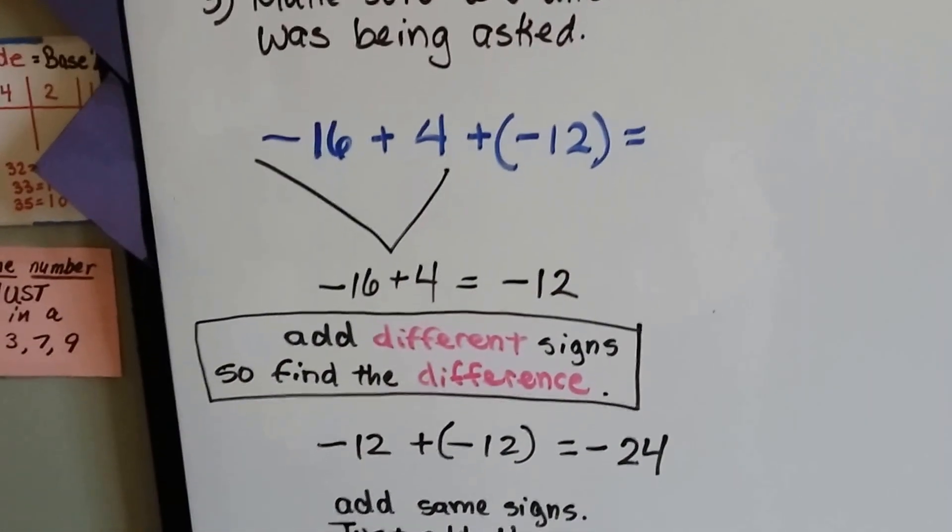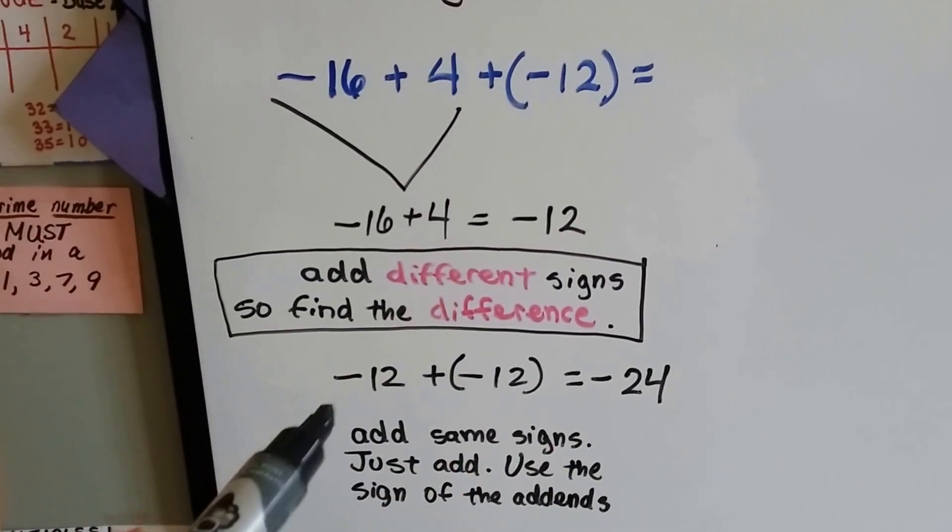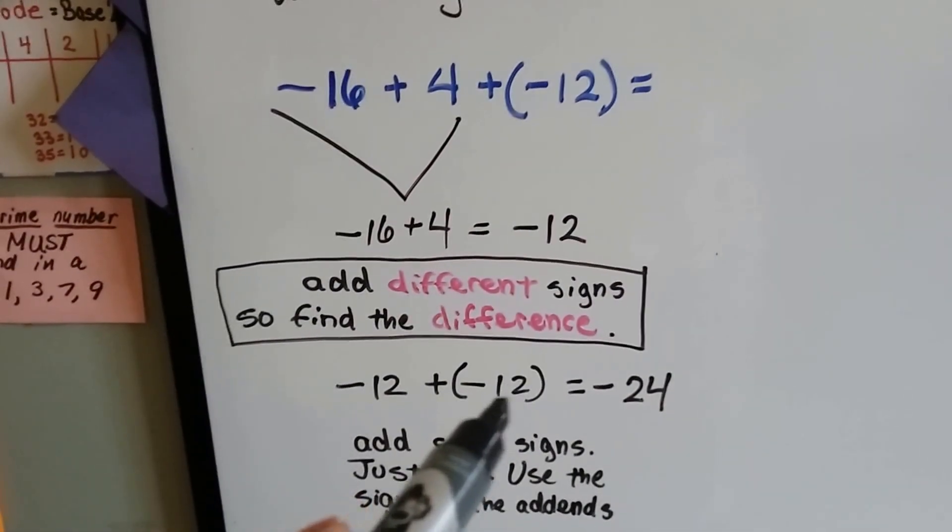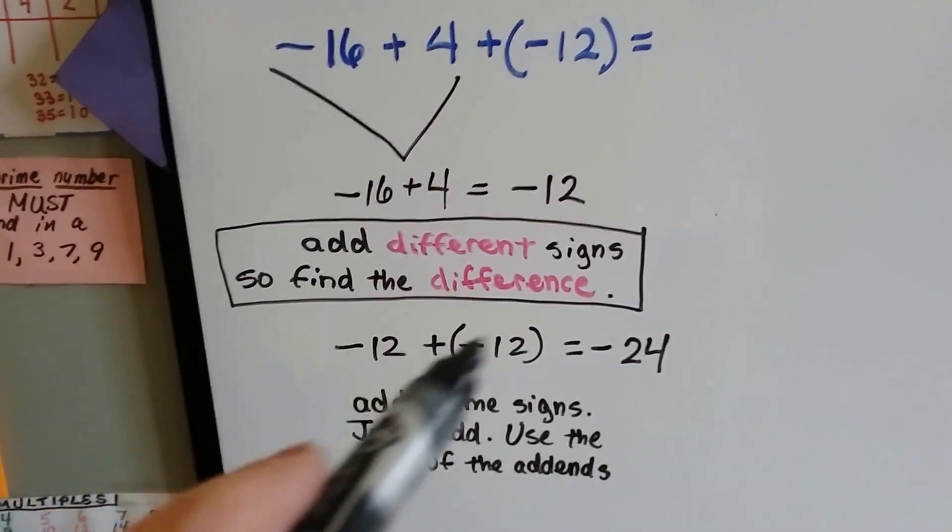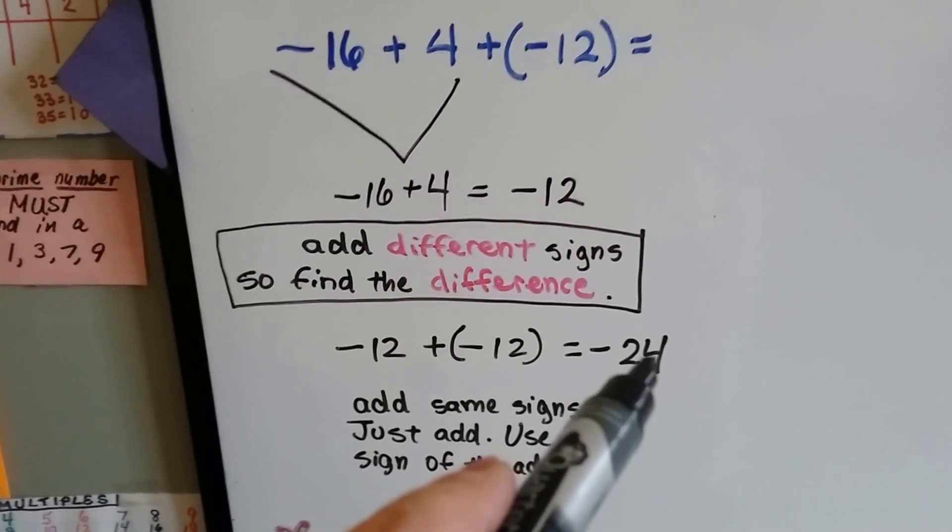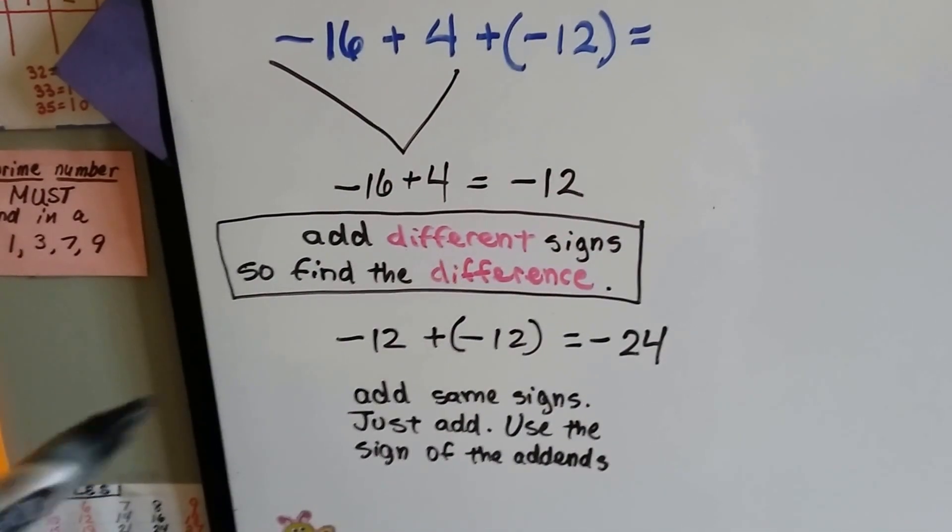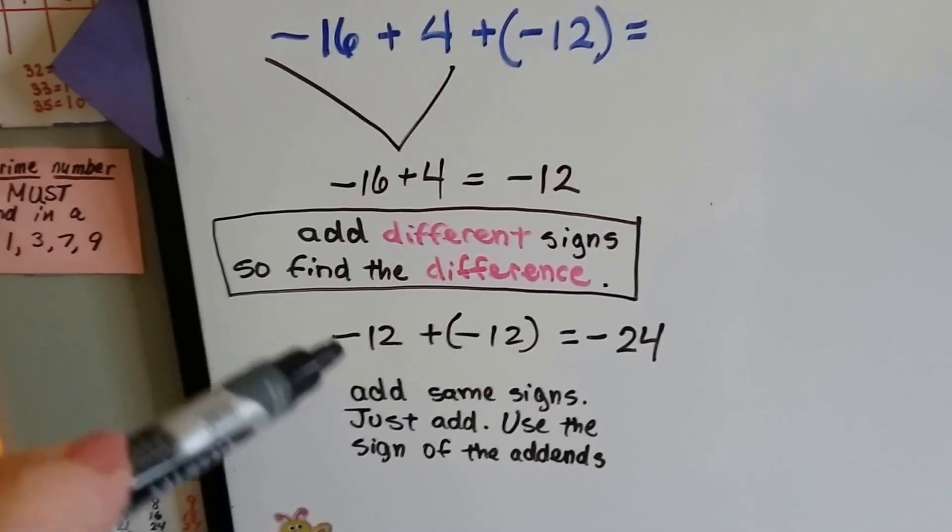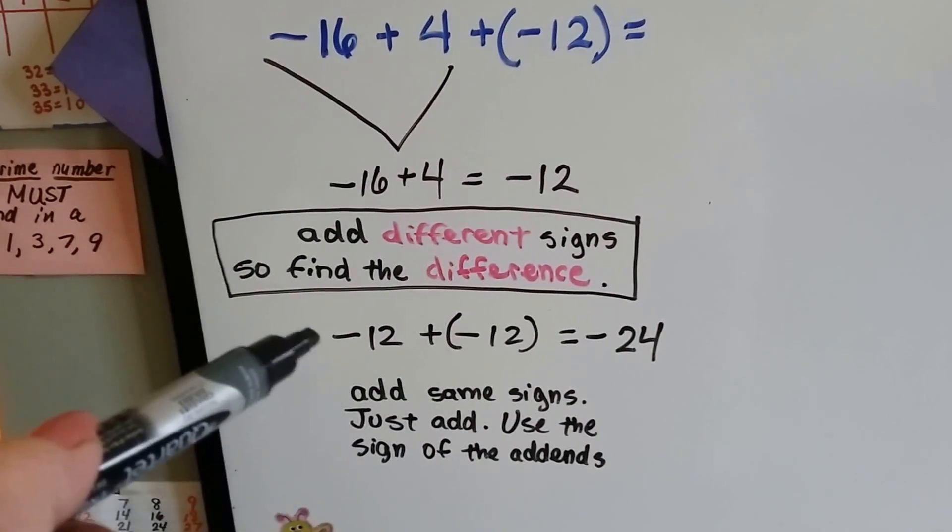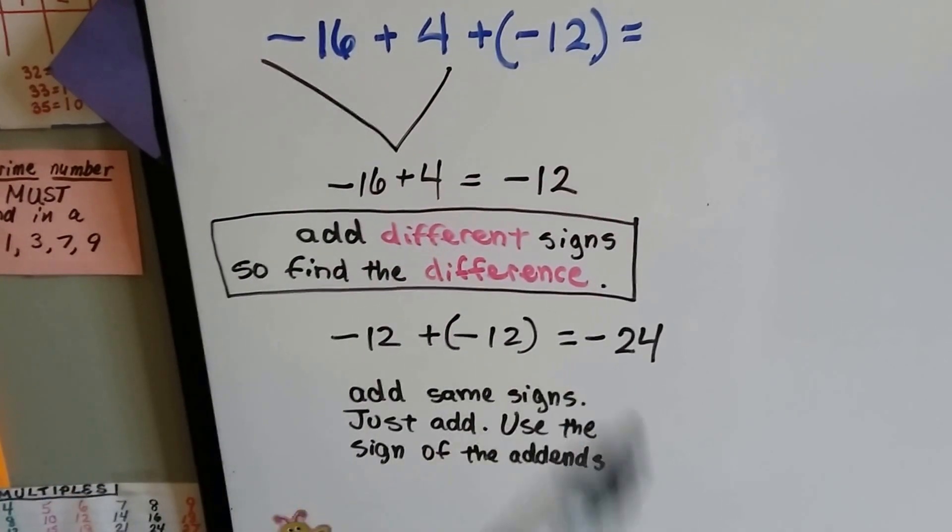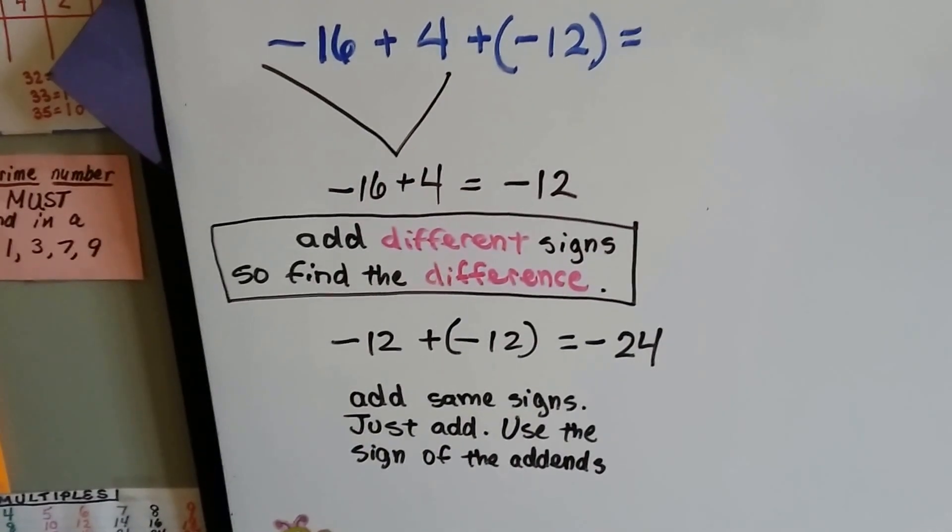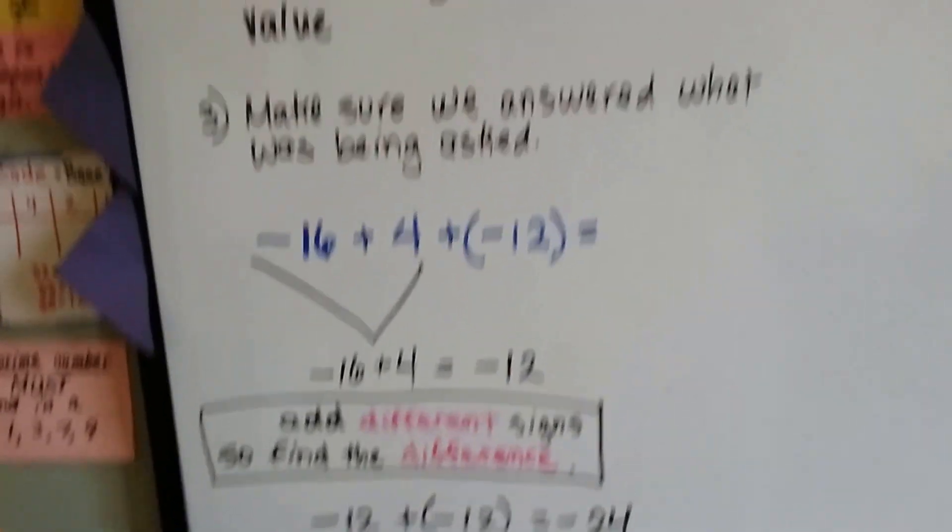So now we still have this negative 12. So now we've got negative 12 plus negative 12. Well, 12 and 12 is 24. And the signs are the same, so we just add them together. And we've got 24. And for what sign do we use? Well, they have the same sign, don't they? See how they have the same sign right here? And we're adding. So we use the sign of the addends, so we have a negative 24. See? That wasn't that hard, was it?